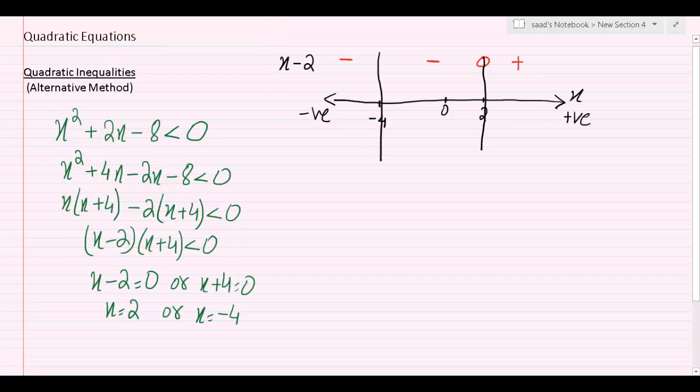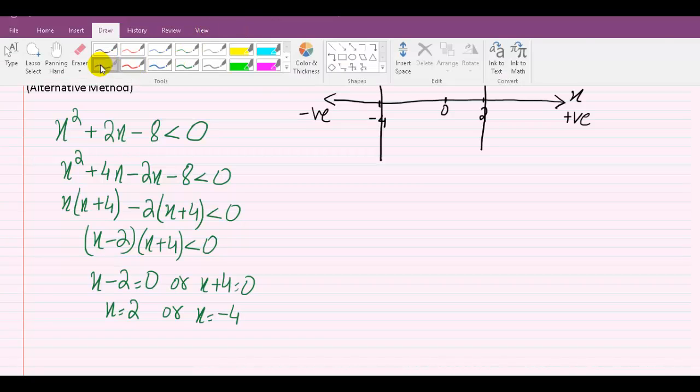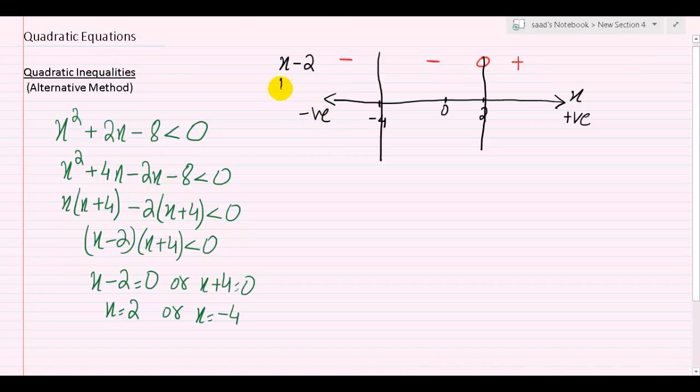Now let's bring x plus 4 under the spotlight. So here we have x plus 4. I'm going to go back to the color red. Now if I plug in minus 4 in this expression, in x plus 4, it will come out to be 0 exactly.